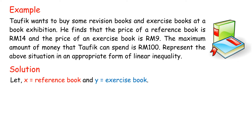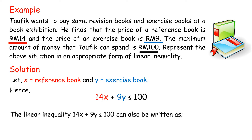Solution: Let X equal reference book and Y equal exercise book. Hence, 14X plus 9Y less than or equal to 100. The price of a reference book is RM14, the price of an exercise book is RM9, and the total price is less than or equal to RM100. The linear inequality 14X plus 9Y less than or equal to 100 can also be written as 14X less than or equal to 100 minus 9Y, or 9Y less than or equal to 100 minus 14X.